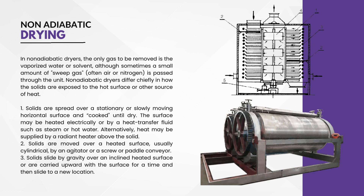However, non-adiabatic dryers have the disadvantage of requiring more energy and space than adiabatic dryers. They can be classified according to how the solids are exposed to the heat source and have numerous types. Examples include tray or shelf dryers, drum or roll dryers, and slide dryers. These will be discussed in detail in coming videos.